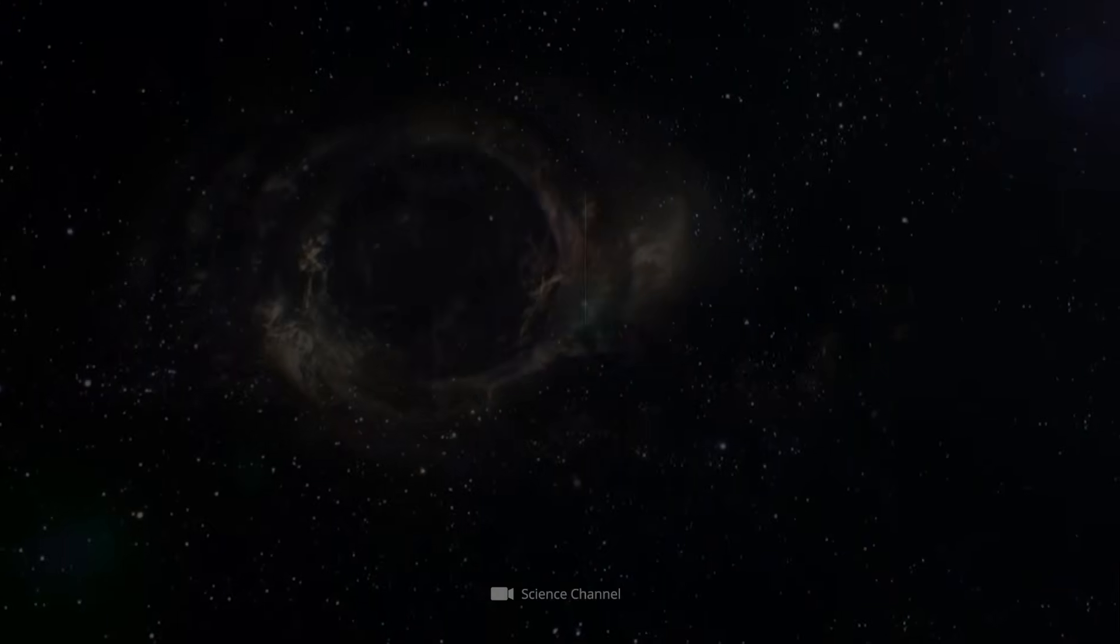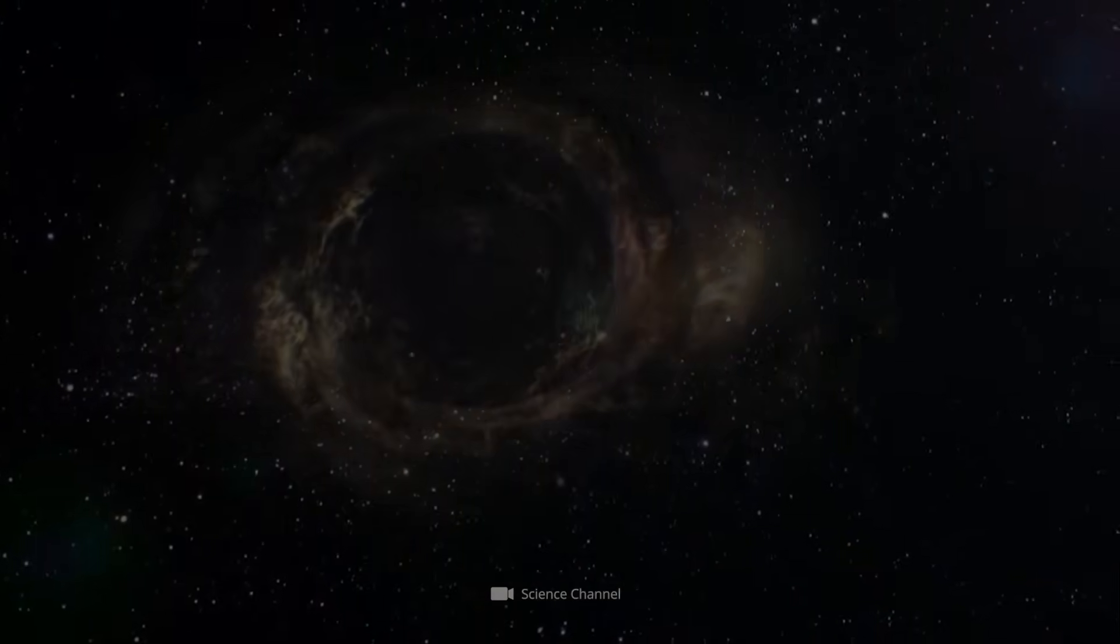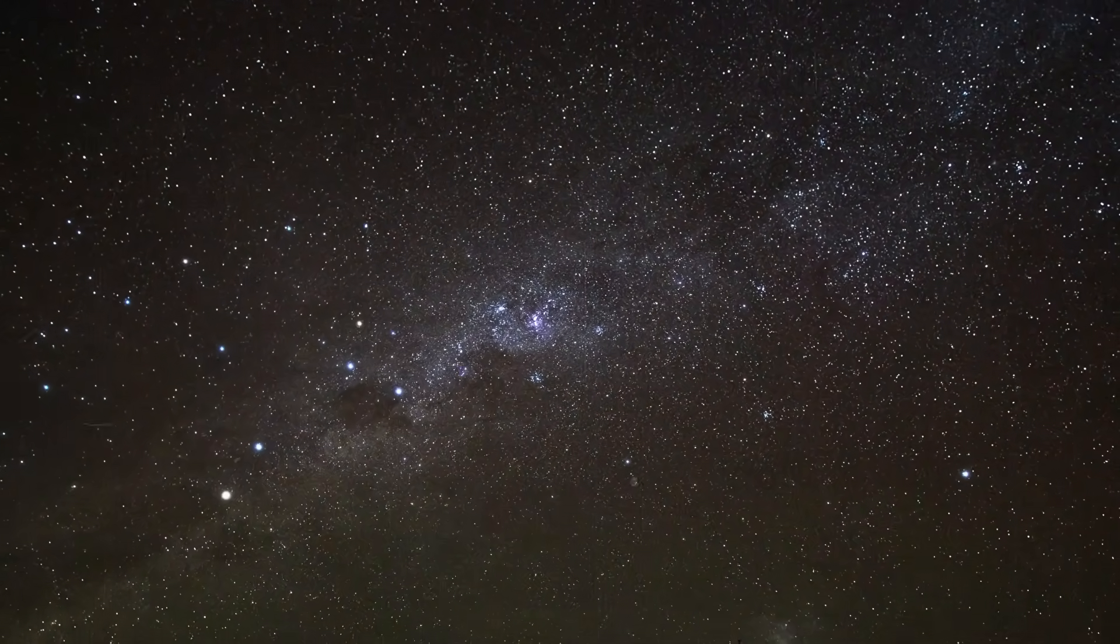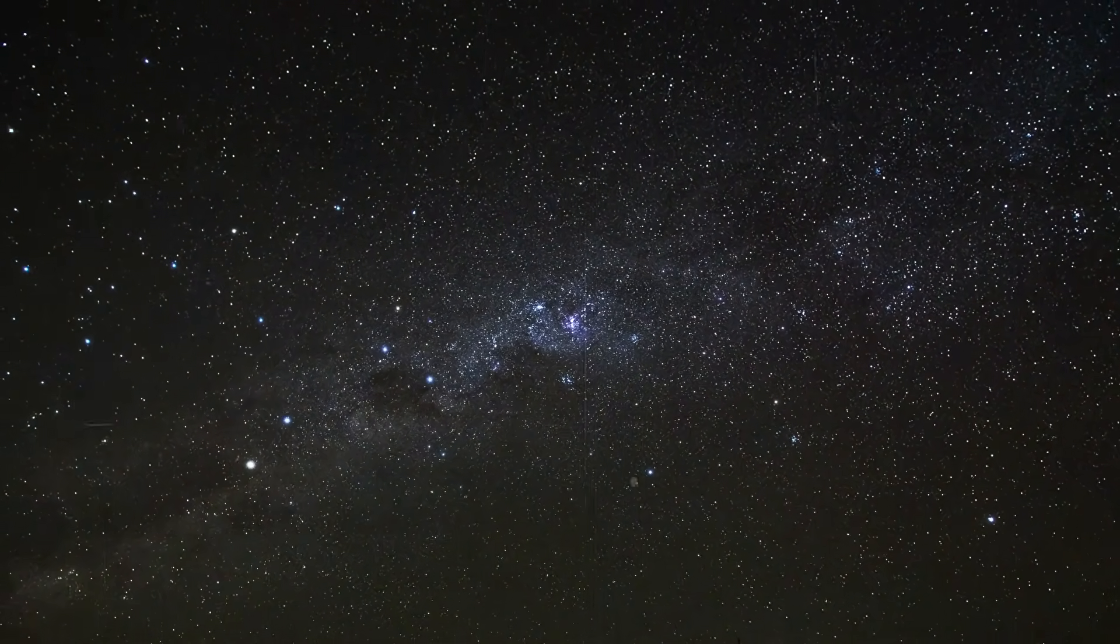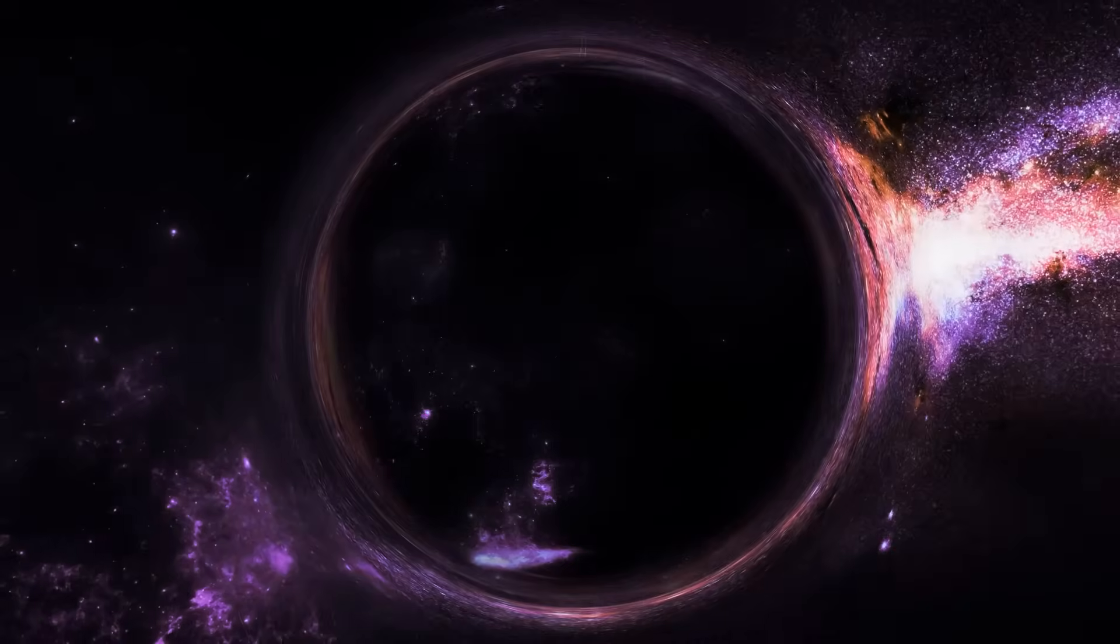It sounds crazy, but black holes are constantly flying through the solar system, possibly even right through us, and we don't even notice them. But how is that possible?